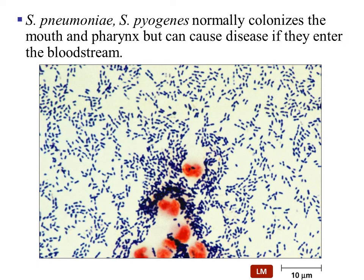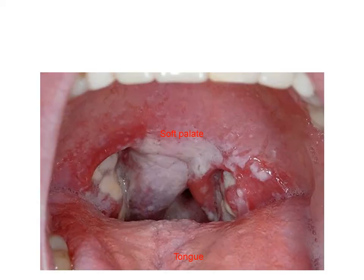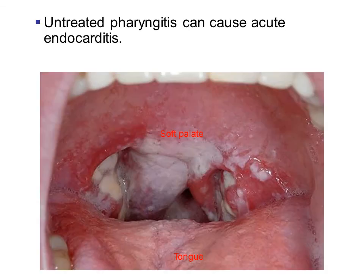Streptococcus pneumoniae and Streptococcus pyogenes normally colonize the mouth and the pharynx, but can cause disease if they enter the bloodstream. Streptococcus colonizes the mouth and is associated with cavities, attached to the biofilm stuck to the teeth. Sometimes this bacteria can infect the pharynx — if so, you have pharyngitis. Untreated pharyngitis can cause acute endocarditis, but this is very rare.